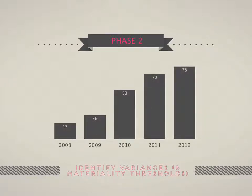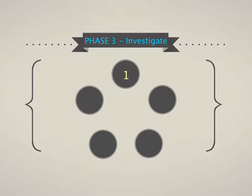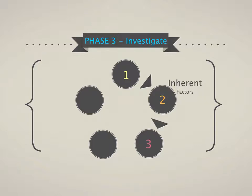Then we identify the threshold and variances. If the variance isn't big, materiality kicks in and we wouldn't check if it falls underneath materiality. When investigating differences, we consider whether this is an inherently risky area — for example, are sales recorded low because it's a cash-based business trying to keep sales off the books? If so, it's an inherently risky business.